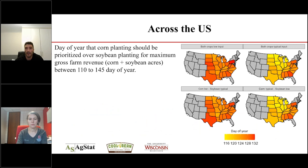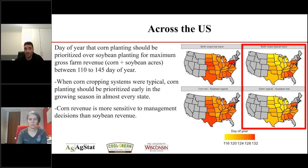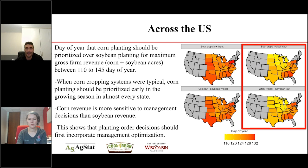We repeated the same analysis across all 310 locations in the United States and tried to identify the day of year that corn planting should be prioritized over soybean for maximum gross farm revenue. When corn cropping systems were typical, corn should be prioritized early in the growing season in almost every state. This shows that corn revenue is more sensitive to management decisions than soybean revenue. Overall, as a general conclusion, planting order decisions should always incorporate management optimization, because management practices matter and affect the results.